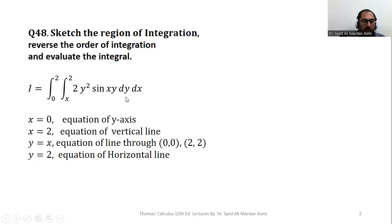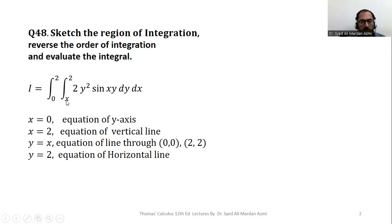In order to sketch the region of integration, we need some boundaries. These boundaries are obtained from the limiting values of the variable. The limits of x are 0 to 2, so x equal to 0 and x equal to 2 will provide two boundaries of the region. y equal to x and y equal to 2 will provide the other two boundaries, as the limits of y are y equal to x and y equal to 2.